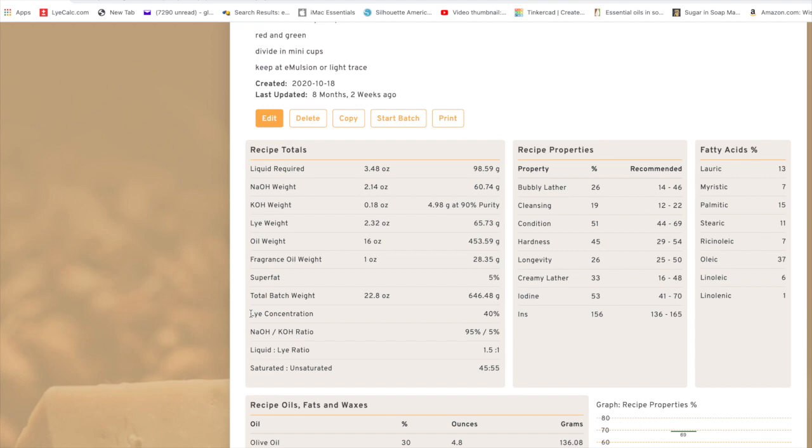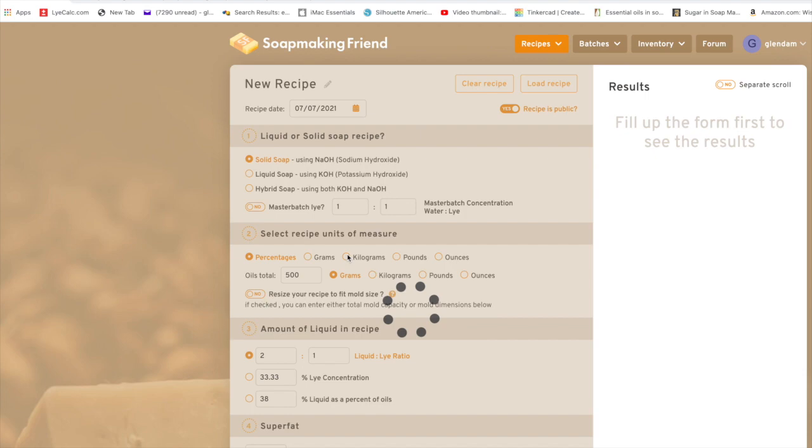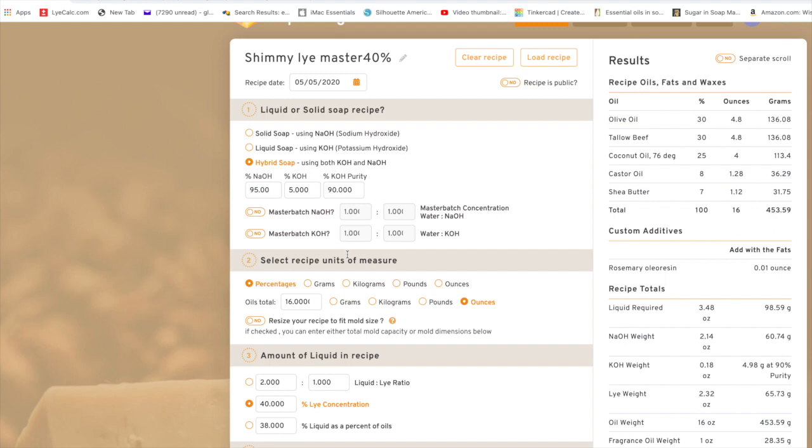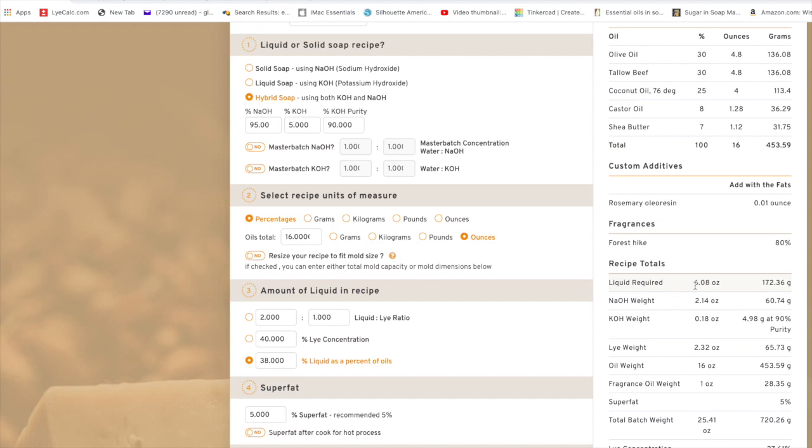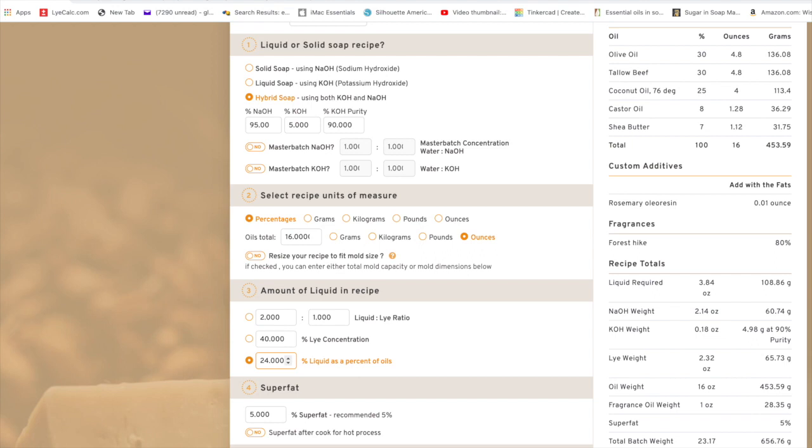Number one was that my lye concentration was 40 percent. This means that I have little water in the soap. For this recipe, 40 percent lye concentration equals 3.48 ounces of water. If you're more used to seeing the numbers from soap calc, they usually go by a 38 percent percentage of water based on the oil weight. So if I was going by that, this would be close to doing 22 percent instead of 38 percent, a significant water discount.